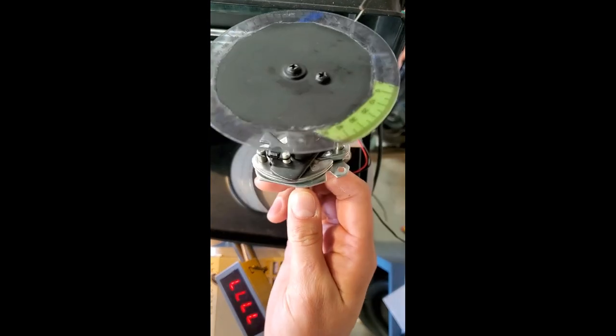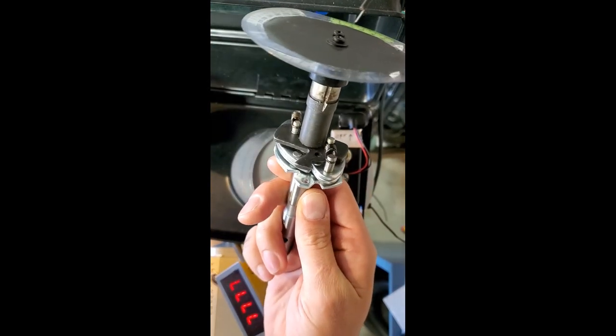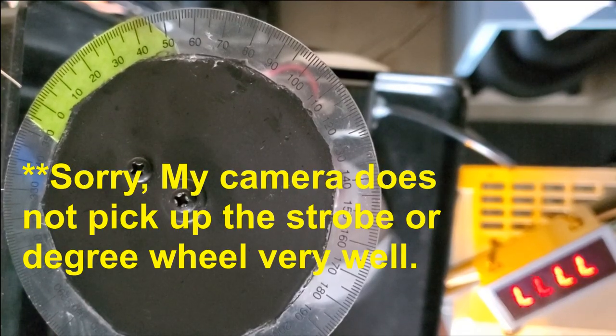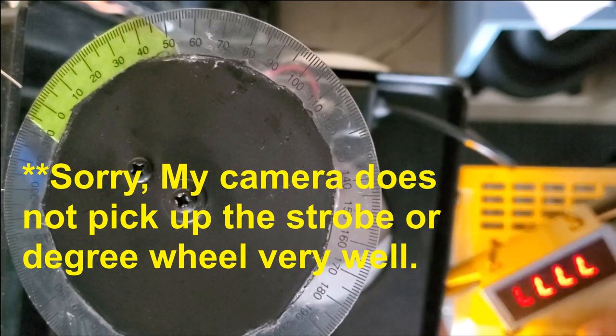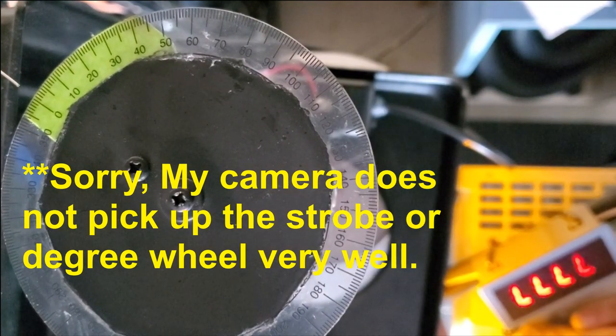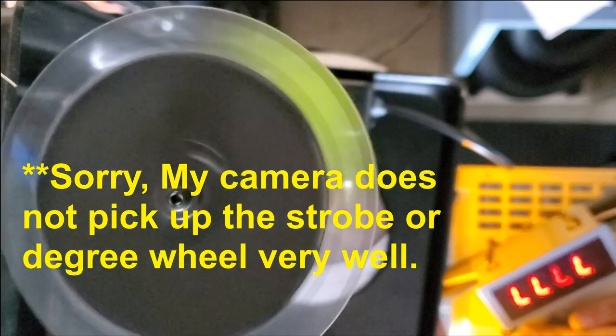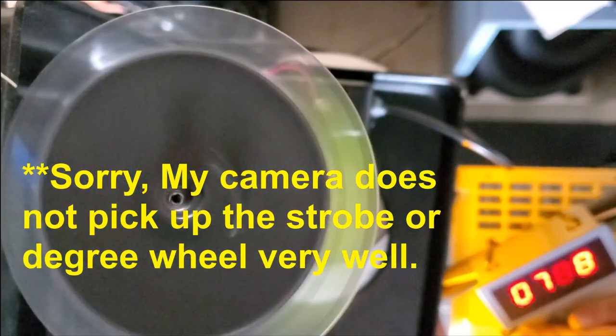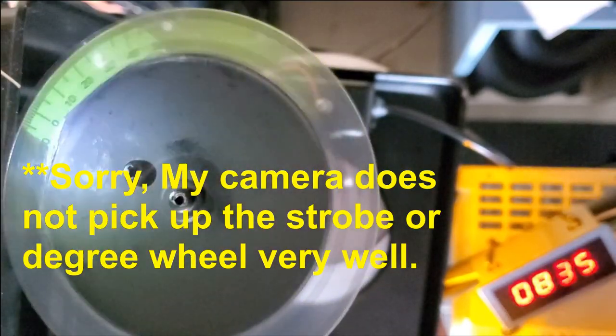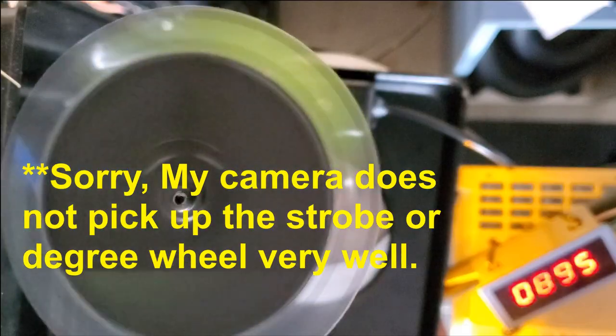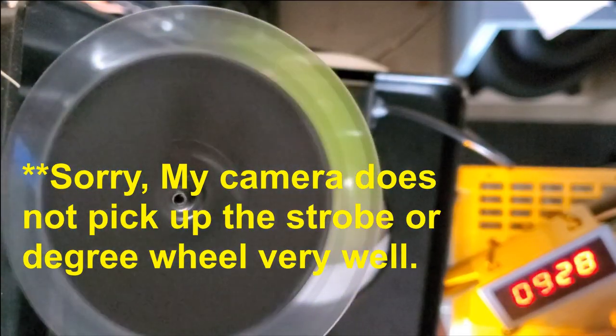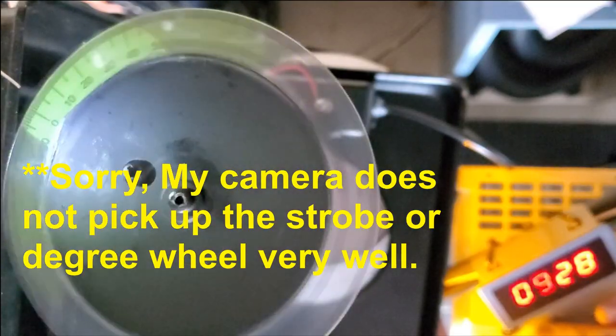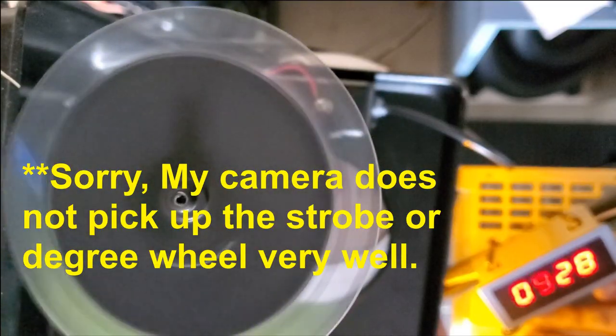All right, I'm going to stick in the PowerSpark unit as you can see here into the machine and we'll retest this one. And now let's test the PowerSpark unit and find out where full advance is at. So for comparison, I'll stop at five degrees as well as 13 to see what they are. Five degrees is approximately 928 distributor speed.